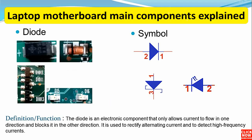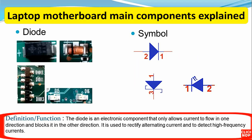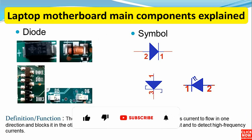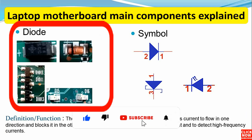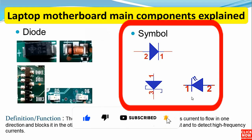The diode has two terminals: a cathode and an anode. As a definition, the diode is an electronic component that only allows current to flow in one direction and blocks it in the other direction. It is used to rectify alternating current and to detect high-frequency currents. Here we have the diode images and over here we have the diode symbols.